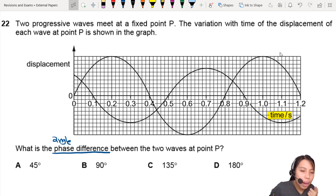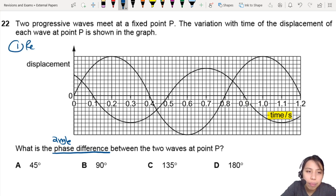First, we need to find the time lag, then we convert it to angle. In terms of time, how much is one wave lagging from the other? First step: choose a reference point—the same point on both waves.